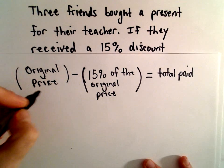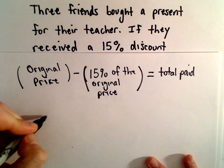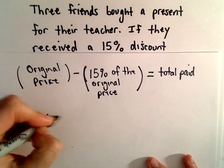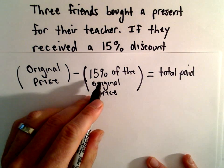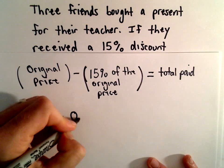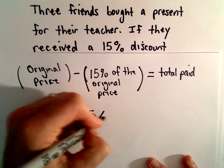Let's call the original price X. So if we take the original price X and subtract away 15% of the original price. Well, 15% as a decimal will be 0.15, so we'll multiply that by X.